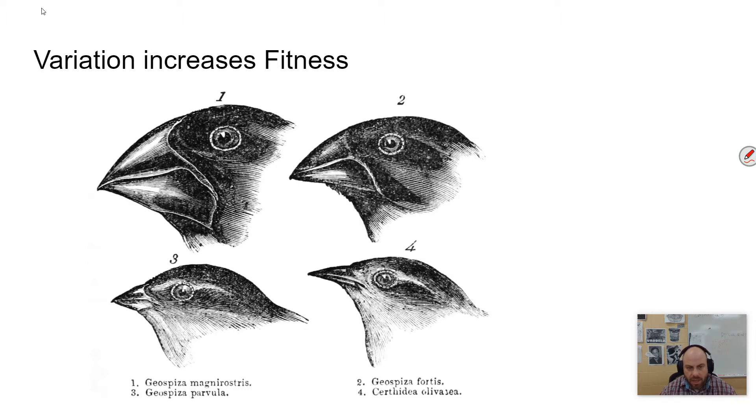Variation can be evident on the physical level, like these birds having different shaped beaks, but a lot of times it's evident on the cellular and molecular level and has just as much impact. It can be differences in molecular structure, in molecular types, or it can be a difference in the number of different molecules that are present as well.